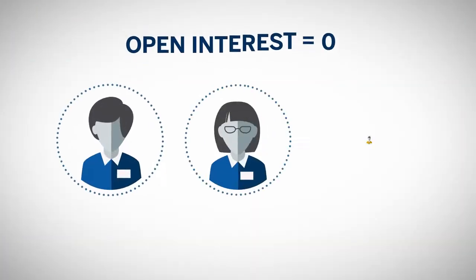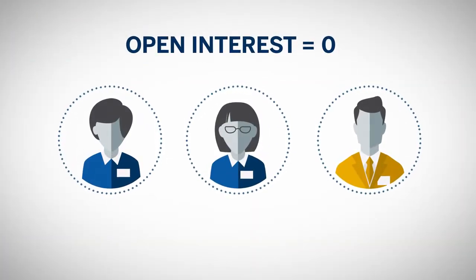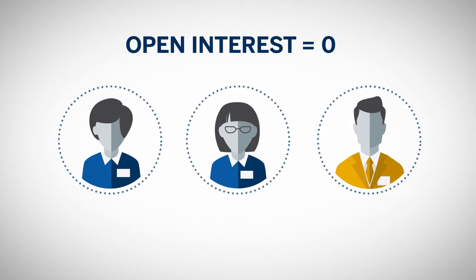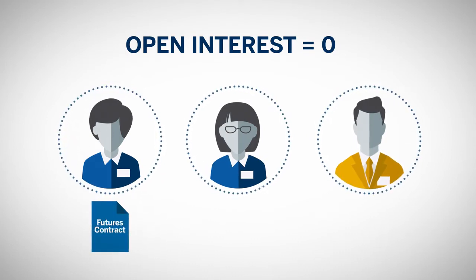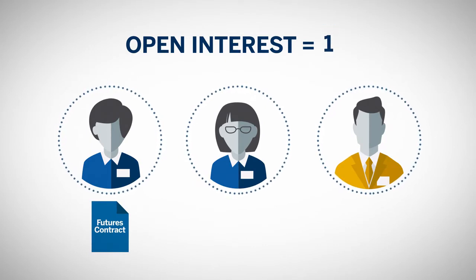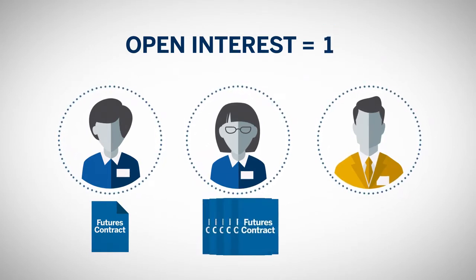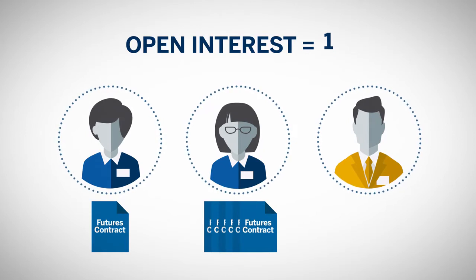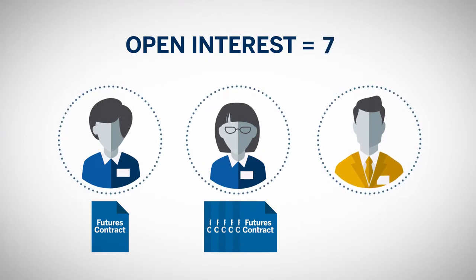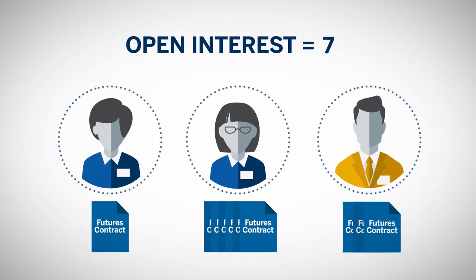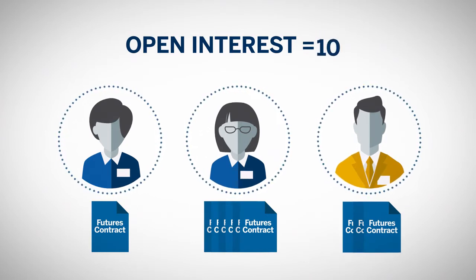For example, Sharon, Cynthia, and Kurt are three traders trading the same futures contract. If Sharon buys one contract to enter a long trade, open interest increases by one. Cynthia also goes long and buys six contracts, thereby increasing open interest to seven. If Kurt decides to short the market and sells three contracts, open interest again increases to ten.